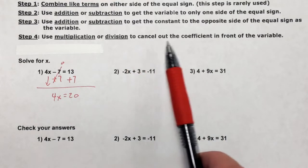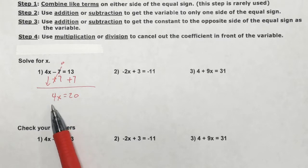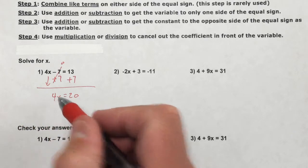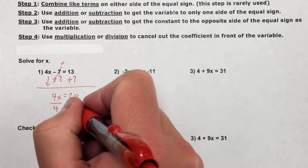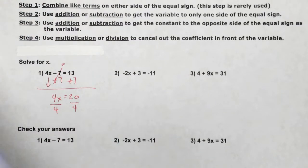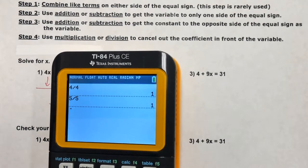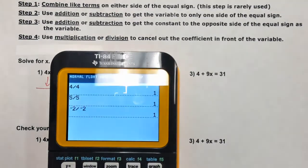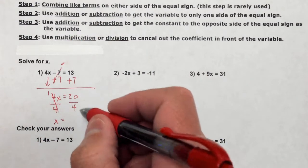Step four says use multiplication or division to cancel out the coefficient in front of the variable. Coefficients are the numbers in front of the x. I need to cancel the 4 in front of x by doing the opposite — since it's 4 times x, I divide. Divide both sides by 4: 4 over 4 simplifies to 1, and 1 times x is just x. And 20 divided by 4 is 5. So x equals 5.